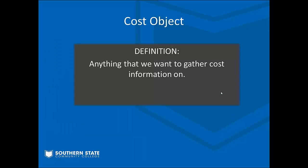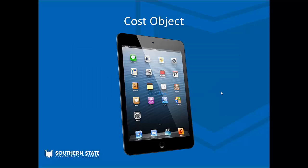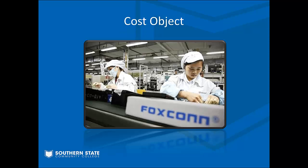Another way we can talk about cost is to group them according to a cost object. A cost object is simply anything that we want to gather cost information on. We're going to use the Apple iPad as an example throughout this lecture. The iPad itself could be a cost object — we could define costs according to a product line: an iPad, a MacBook, or an iPhone. On the flip side, we could gather costs according to the factory as a whole, such as all costs at our factory in Taiwan, regardless of product line.